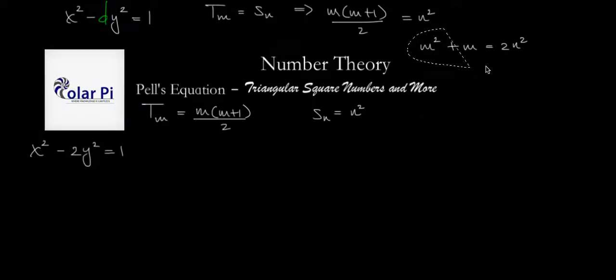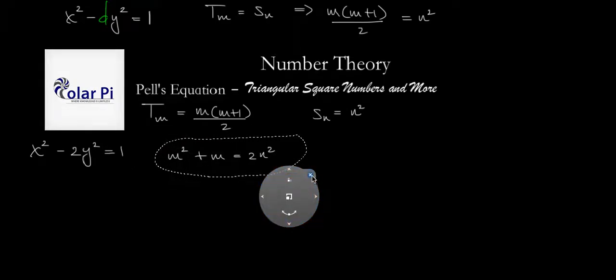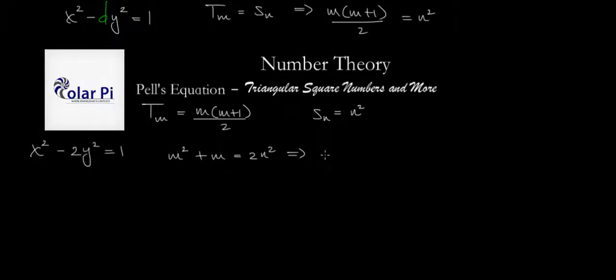Where to from here? From here, we can complete the square on this left side. Starting from here, we see that we can write m squared plus m plus 1 quarter. So I just completed the square, so this is now a perfect square binomial. And then to make up for adding 1 quarter, I have to subtract 1 quarter, and then this will equal 2n squared.